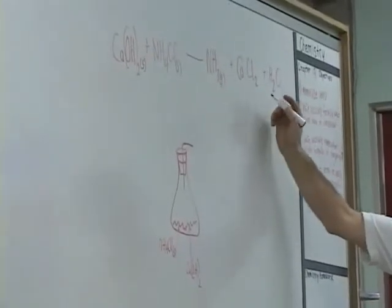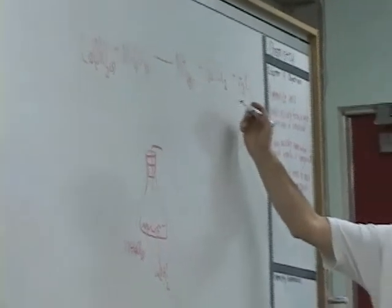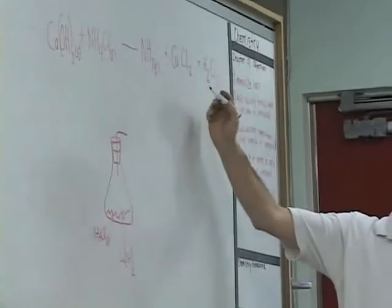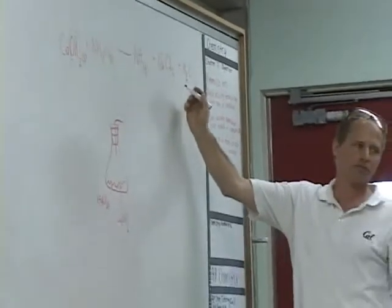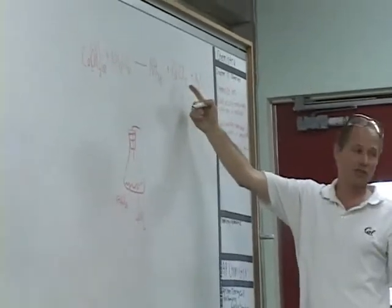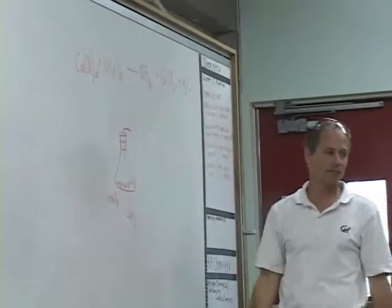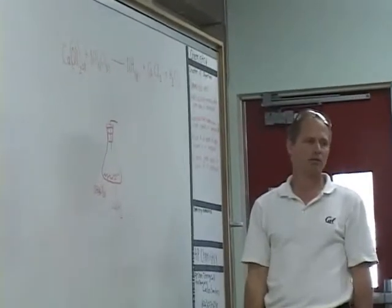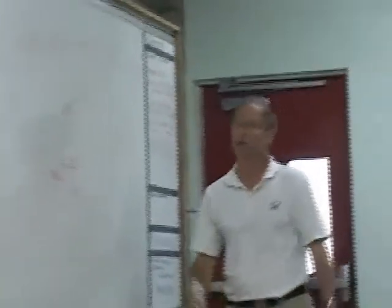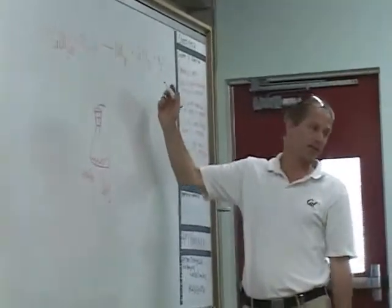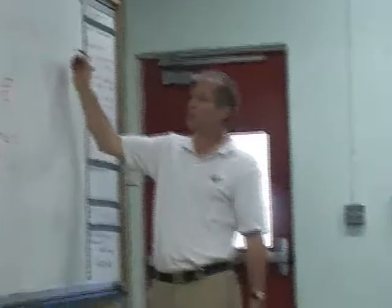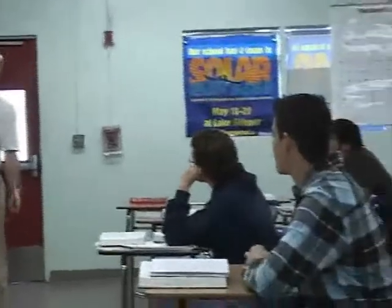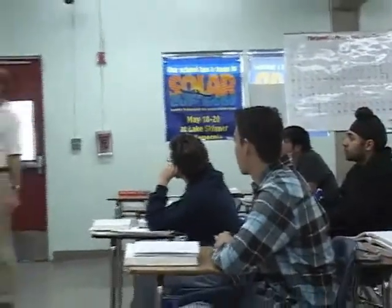And in your opinion, what physical state would... Ishi, what's the name of this compound? Calcium chloride. And what physical state would calcium chloride be in? Solid. It could be solid or it could be aqueous — dissolving in water.